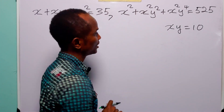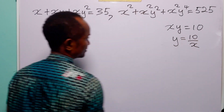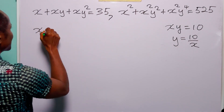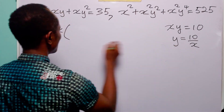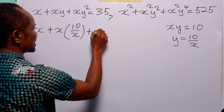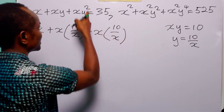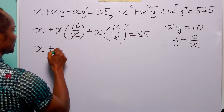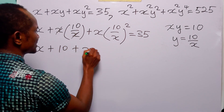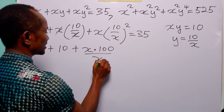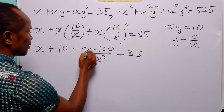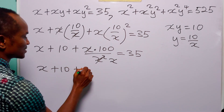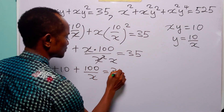And from this equation, we have that y equals 10 over x. We now substitute 10 over x for y in the first equation. We have x plus x times 10 over x, plus x times 100 over x squared, equals 35. This simplifies since x cancels, leaving us with x plus 10 plus 100 over x equals 35.